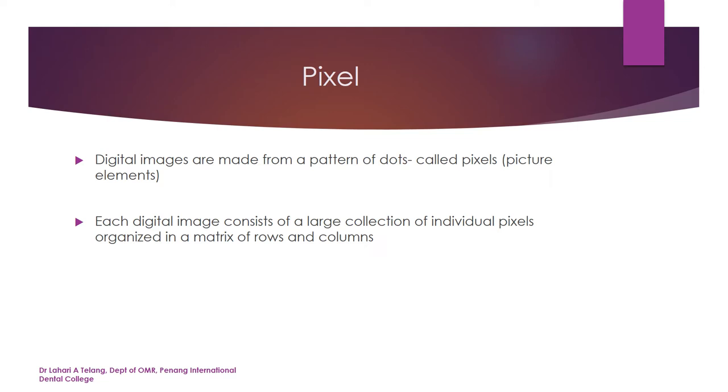At this point I want to introduce some terminology. Number one is pixel — digital images are made from a pattern of dots called pixels, or picture elements. Each digital image consists of a large collection of individual pixels organized in a matrix of rows and columns. For example, this pattern of white and black tiny boxes, when viewed from a distance, looks like the face of a cat or lion. Multiple pixels together make up a digital image.